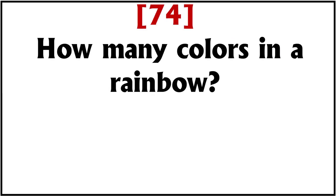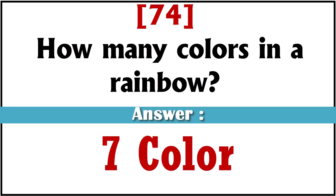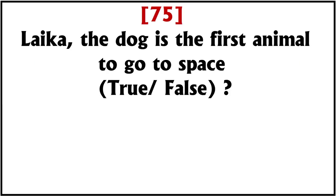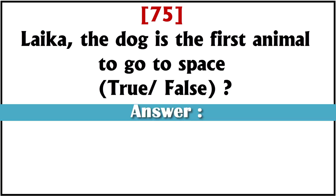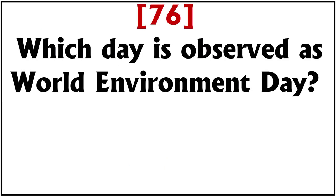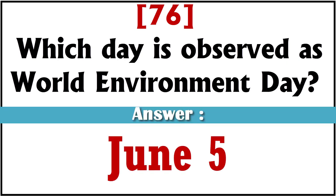How many colors are in a rainbow? Seven colors. What is the name of the first dog to go to space? Laika. The dog is the first animal to go to space, true or false? True. Which day is observed as World Environment Day? June 5th.